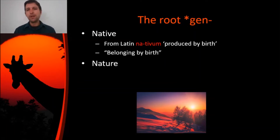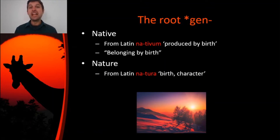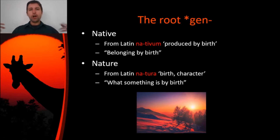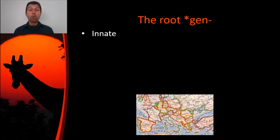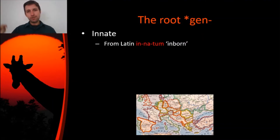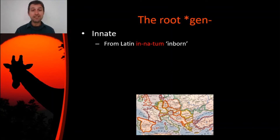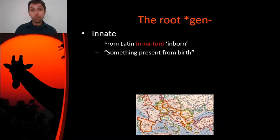Another word starting with just na that also comes from the Gen root is nature. This comes from Latin natura, which means birth or character — something that is born inside of someone. Later in English we came to apply this to anything outside our window: trees are born that way, animals are born that way, they have that nature, so we call it nature. Other words where the Gen root shows up as na: innate. Innate has the prefix in on it, which means in in Latin. So innatum means inborn — born in. If something is innate, it's native, it's natural, it's present from birth.